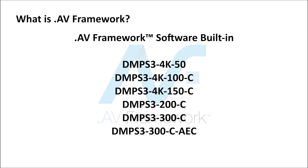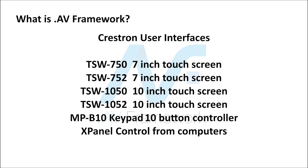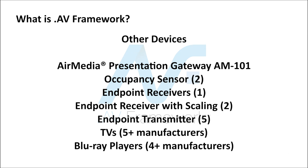.av framework works with a number of DMPS units — six of them to be exact. The one we'll be talking about today is the DMPS3 4K 150C, which is the piece of test equipment we're using. .av framework works with a number of user interfaces: the seven- and ten-inch touch panels from Crestron, also Crestron's ten-button controller, and you can control the system using a computer in XPanel. Other compatible devices include AirMedia from Crestron, occupancy sensors, a number of endpoints, receivers and transmitters, and currently it works with a number of manufacturers of TVs and Blu-ray players.